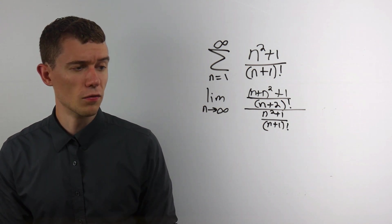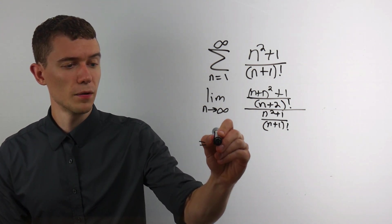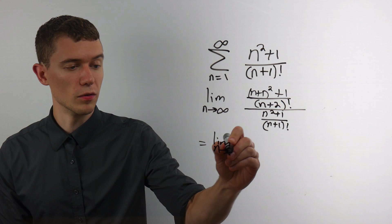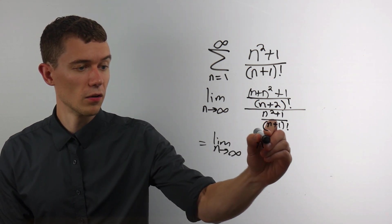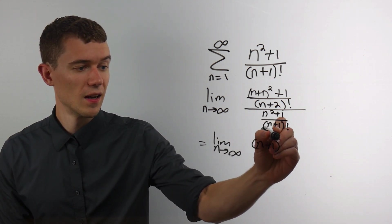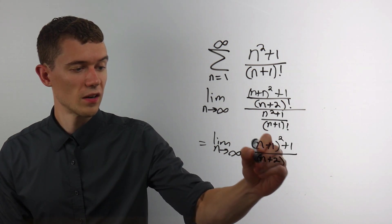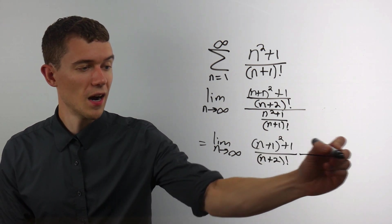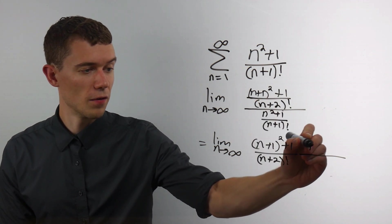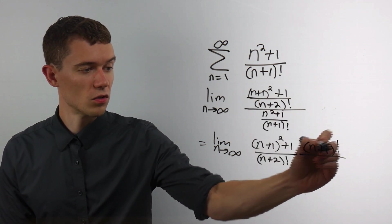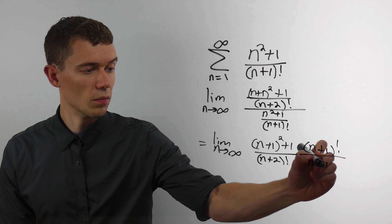Now I have a fraction over a fraction. I might as well simplify that by multiplying by the reciprocal. So that'll look like this over n plus 2 factorial. And then that would be times the reciprocal of this bottom fraction. n plus 1 factorial over n squared plus 1.